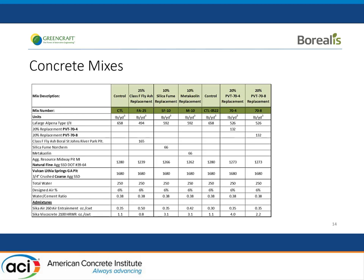We then did concrete mixes at a 0.38 water-to-cementitious ratio, representing what you would see in higher-performance mixes. The cementitious content was 658 lbs (approximately 390 kg). When we used the newer material, we can see how the mixes were done — you can get air entrainment in them without a problem. Slumps are about the same, and we actually used a little less superplasticizer than we did for metakaolin or silica fume, and almost comparable with fly ash.